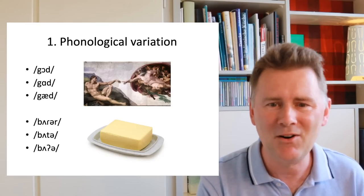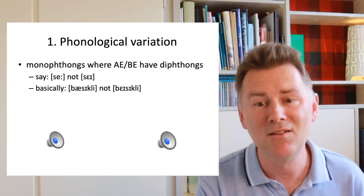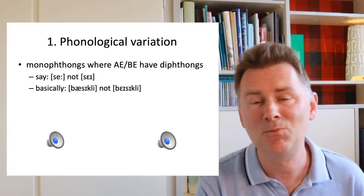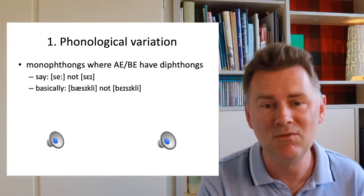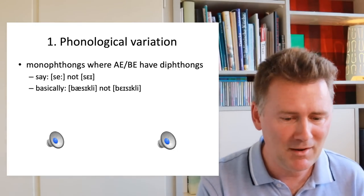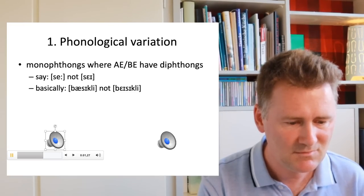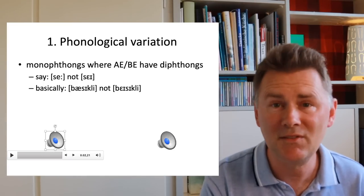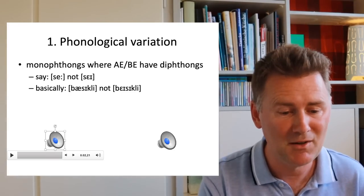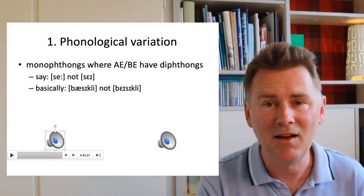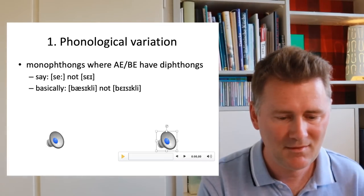Coming back to our speaker of Malaysian English, there are some examples that I highlighted already in the last video, namely that the speaker sometimes produces monophthongs where speakers of British or American English would use diphthongs. Let me play this to you. Okay, so say instead of say. Here's the other one which renders basically as basically. Let's listen to this. Basically, knowledge is generator.